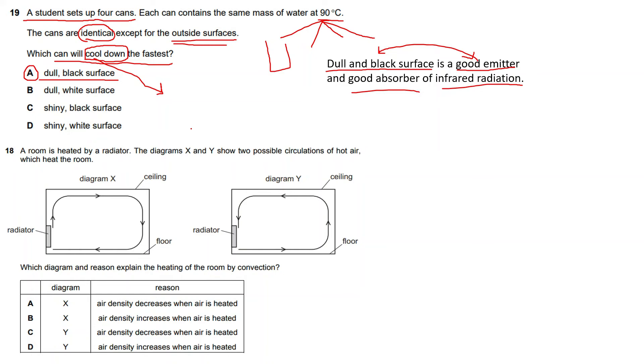Let's move forward to the last question, which is concerning convection. A room is heated by a radiator. Diagrams X and Y show two possible circulations of hot air which heat the room. This is radiator diagram X and this is radiator diagram Y. If you look here, when this air is heated, it shows an upward arrow, which means the air is rising. Here it shows a downward arrow, which means the air is sinking.